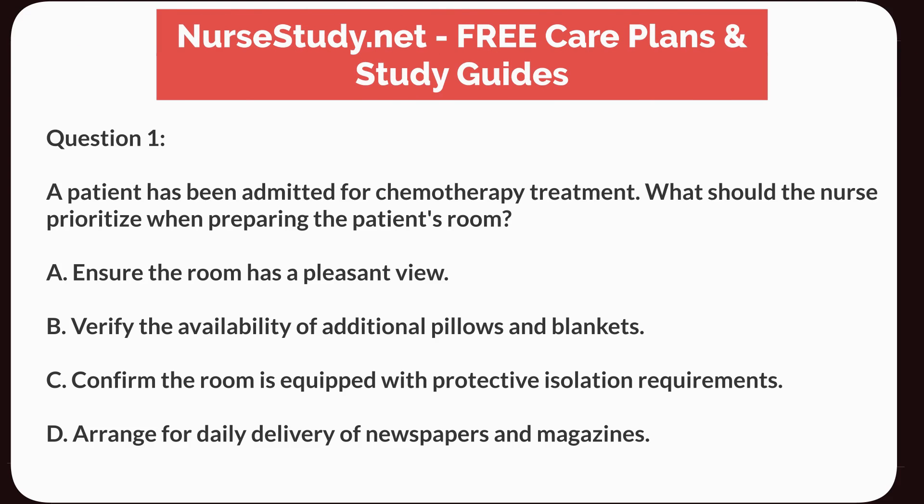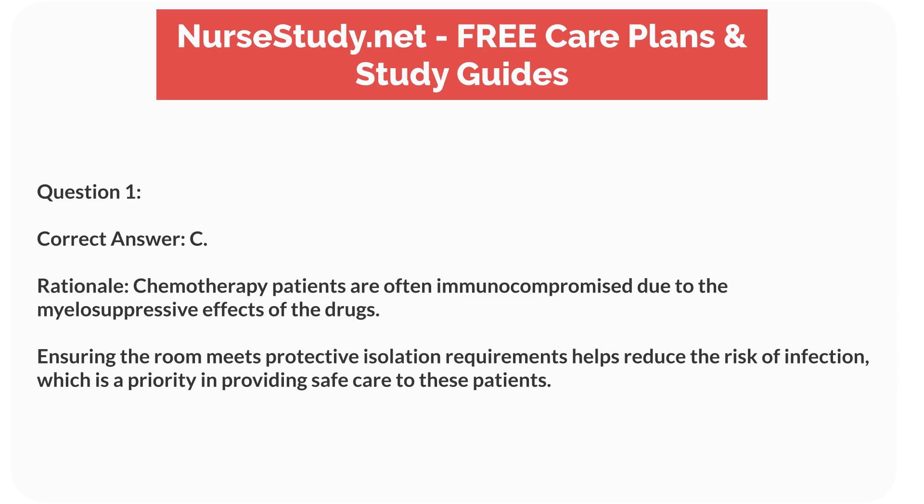Question 1. A patient has been admitted for chemotherapy treatment. What should the nurse prioritize when preparing the patient's room? A. Ensure the room has a pleasant view. B. Verify the availability of additional pillows and blankets. C. Confirm the room is equipped with protective isolation requirements. D. Arrange for daily delivery of newspapers and magazines. Correct answer: C. Rationale: chemotherapy patients are often immunocompromised due to the myelosuppressive effects of the drugs. Ensuring the room meets protective isolation requirements helps reduce the risk of infection, which is a priority in providing safe care to these patients.